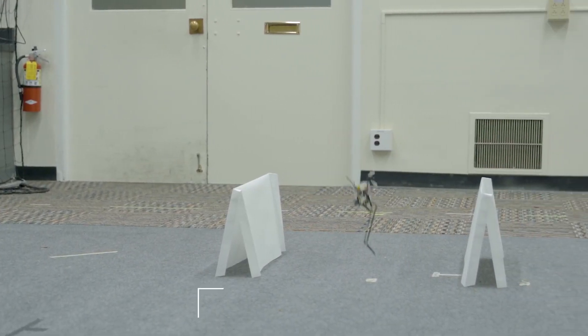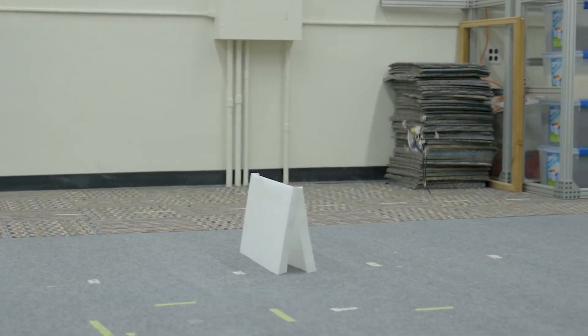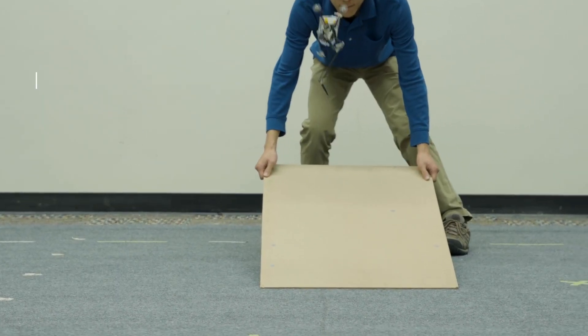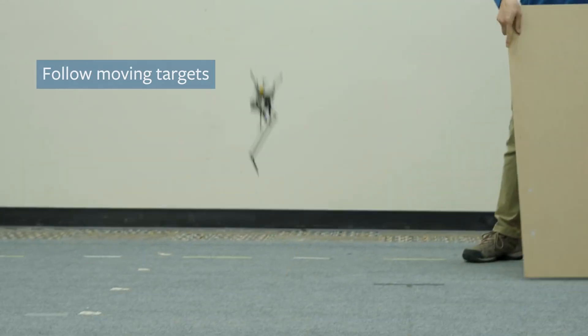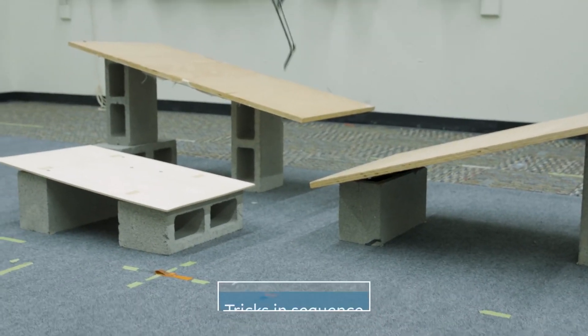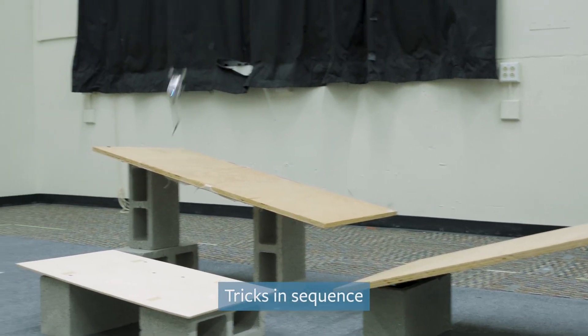It can clear obstacles by making really large jumps or by jumping far. It can even follow a moving target if we tell it what it is. The robot can also chain these maneuvers together so that it can jump up onto things and clear obstacles very quickly.